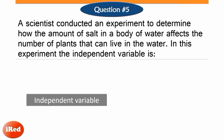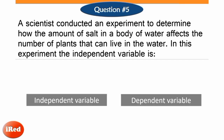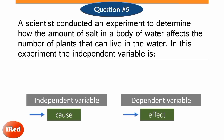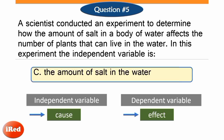An independent variable is the variable that is changed or controlled in a scientific experiment to test the effects on the dependent variable. In this problem, the answer is letter C — the independent variable is the amount of salt in the water. The scientist tests the effect of the amount of salt dissolved in a body of water on the number of plants that can live in the water. Changing the amount of salt may cause a change in the number of plants that grow. Thus, the amount of salt is the independent variable, while the number of plants is the dependent variable.